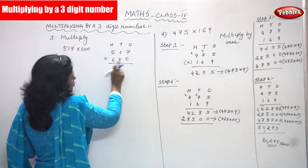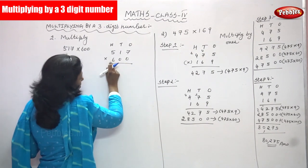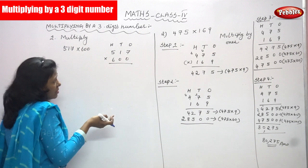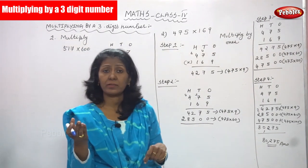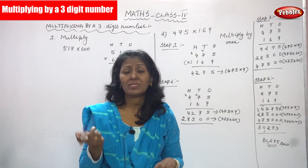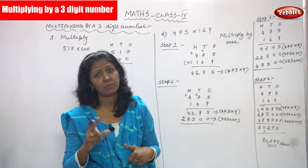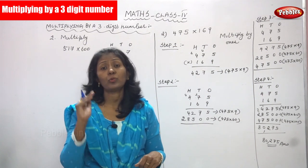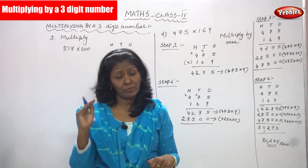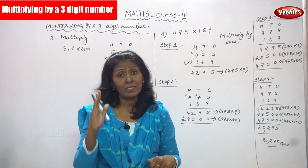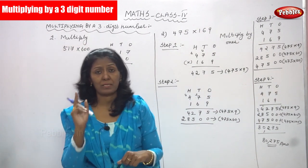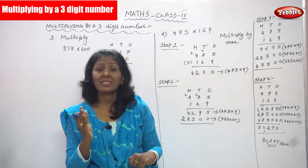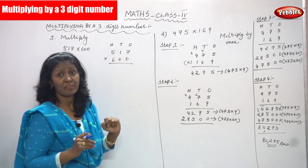So 517 into 600. This is a three-digit number and this is also a three-digit number. So multiplying by a three-digit number. 517 multiplied by 600 — how many zeros? There are two zeros: the 1's place and the 10's place, both are zeros. So simple method: first you don't consider the zeros. Step 1: you have to multiply only the numbers. That means 6 is going to multiply by 517.